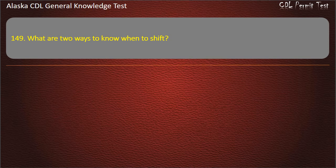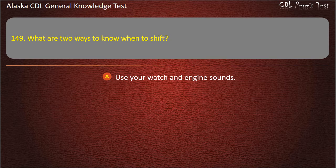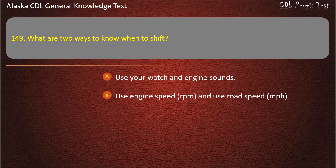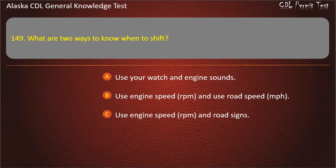Question 149. What are two ways to know when to shift? Use your watch and engine sounds; use engine speed (RPM) and use road speed (miles per hour); or use engine speed (RPM) and road signs. Answer: Use engine speed, RPM, and use road speed, miles per hour.